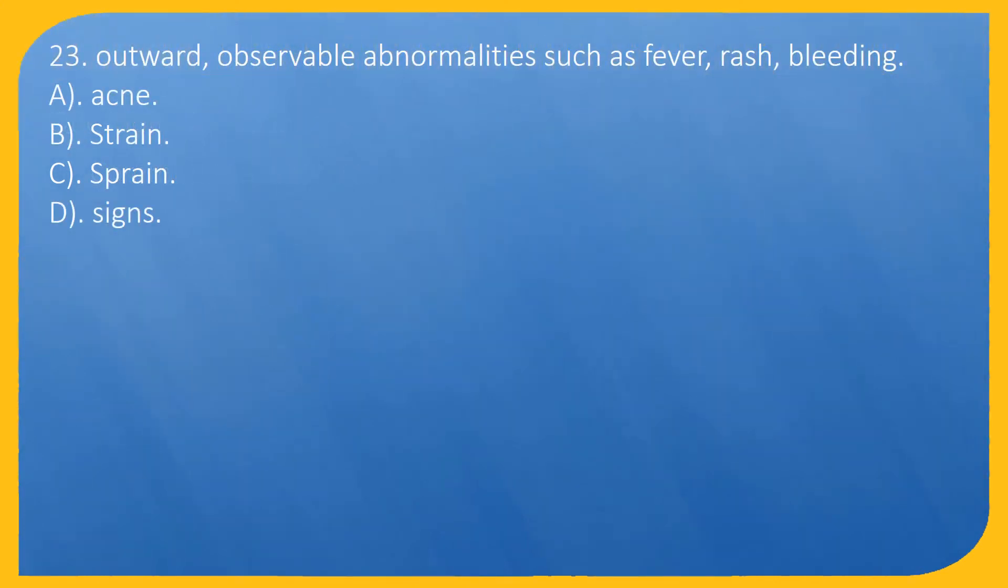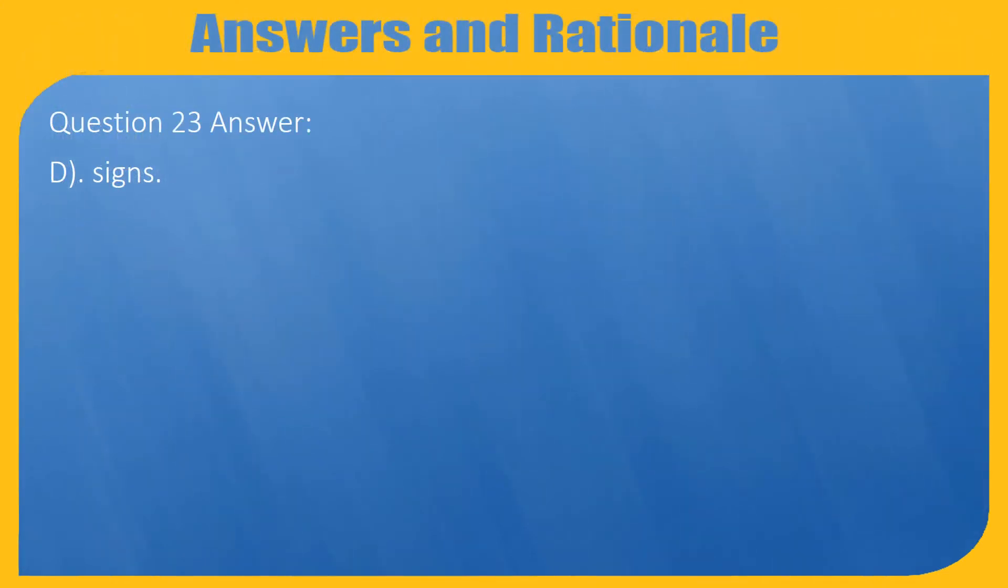Question 23. Outward, observable abnormalities such as fever, rash, bleeding: A. Acne, B. Strain, C. Sprain, D. Signs. Question 23 Answer: D. Signs.